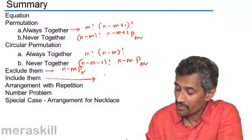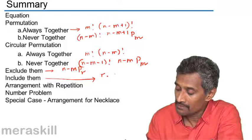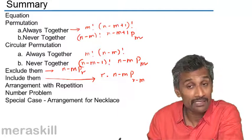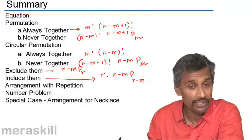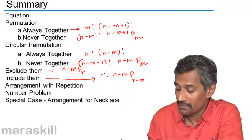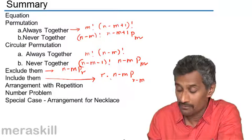Include them, include them, we did the formula, r times n minus m p r minus m, because m items have been removed and included, hence we need to pick up only r minus m out of n minus m, and they can be arranged in r different ways.